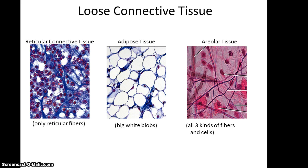To summarize loose connective tissue: reticular connective tissue has only reticular fibers that are clearly branching; adipose tissue basically consists of big white blobs; and areolar tissue has all three kinds of fibers with a variety of cells embedded in a semi-fluid matrix.